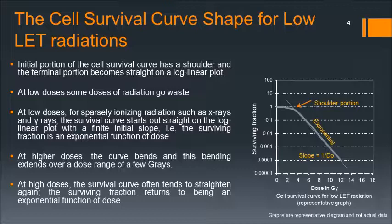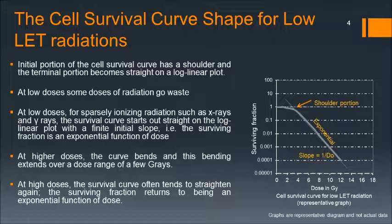Difficulty lies in explaining the biophysical process. Let us now look at the shape of the cell survival curve for low LET radiation, mainly x-rays and gamma rays. The initial portion of the cell survival curve has a shoulder, and the terminal portion has a straight line. This means at low doses some radiation goes to waste — the survival doesn't go down steeply, it goes relatively flat.